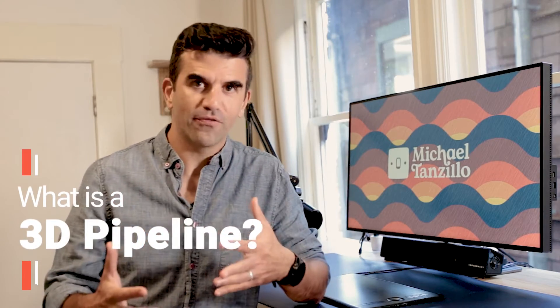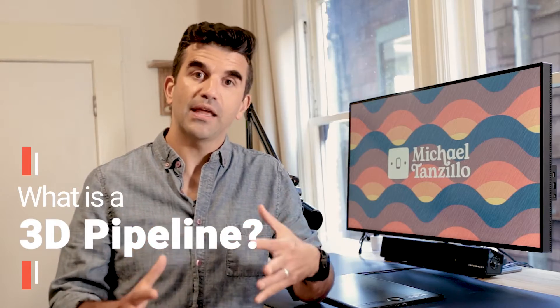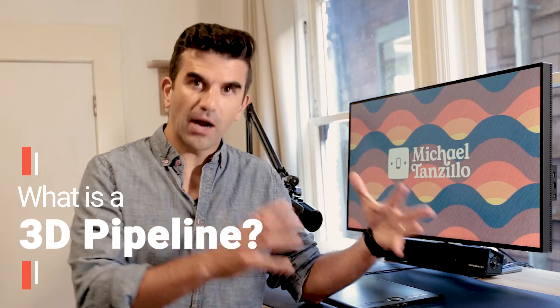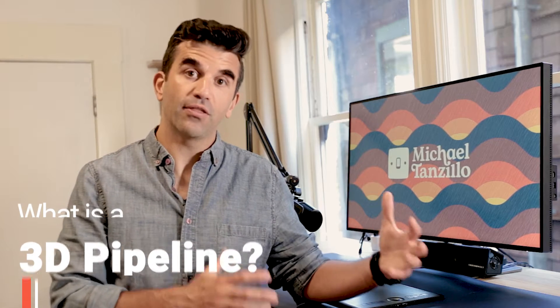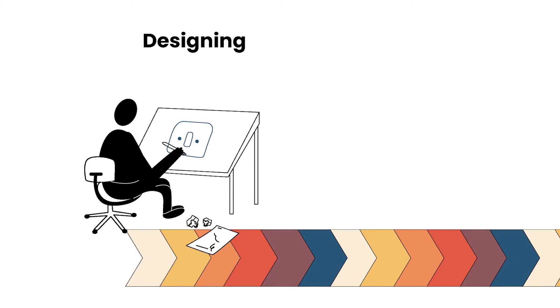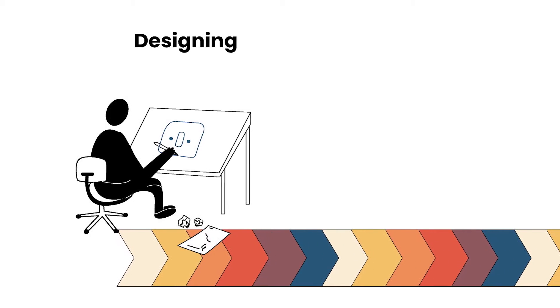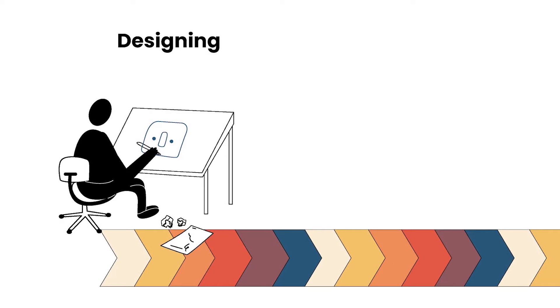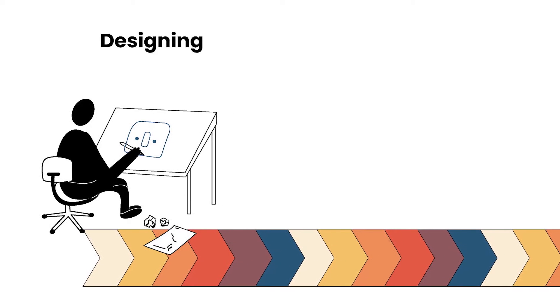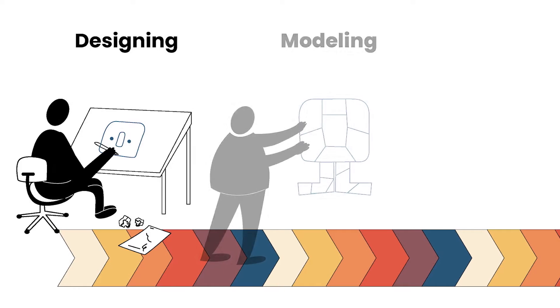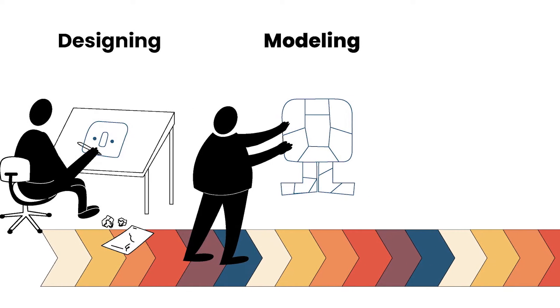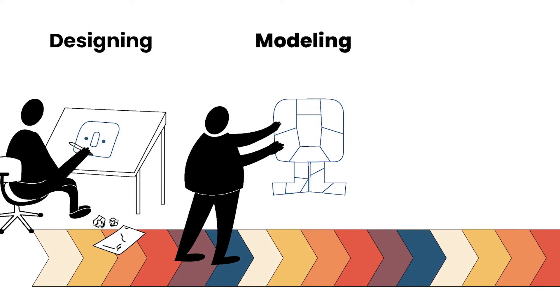I keep using this word '3D pipeline,' and before I go any further, I want to start off by explaining what the pipeline or workflow is for creating a 3D asset. To begin a 3D pipeline, generally you have an artist that will design the asset. This is either done through drawings or traditional sculpture, and then the designer will pass that to a modeler who will create digital geometry based on that design.